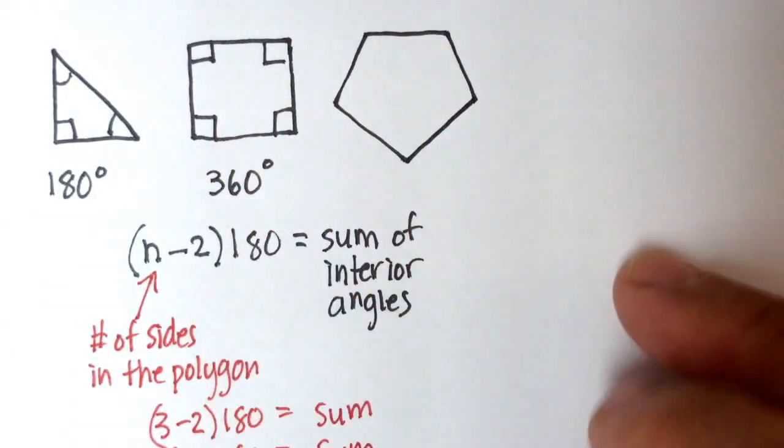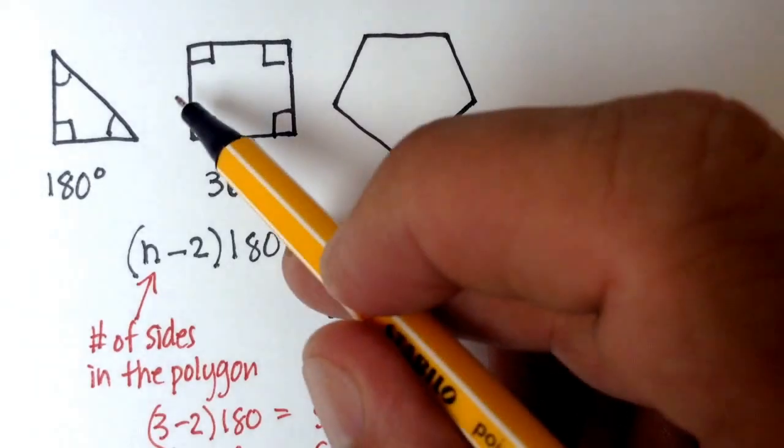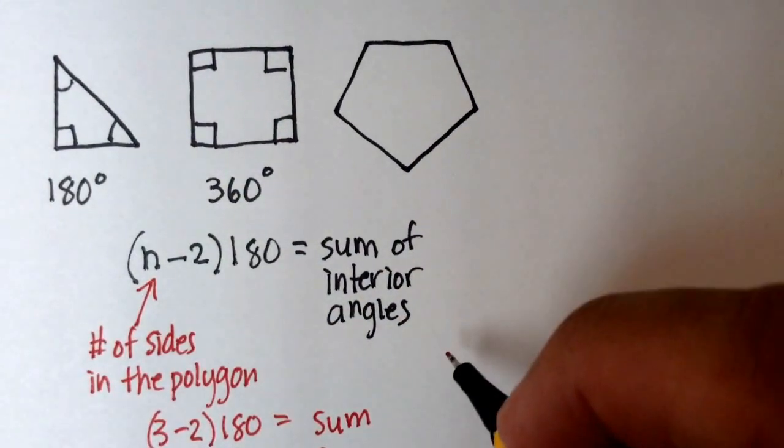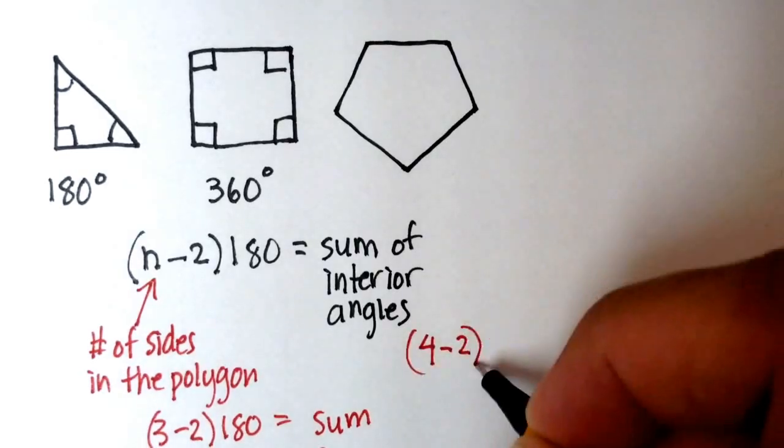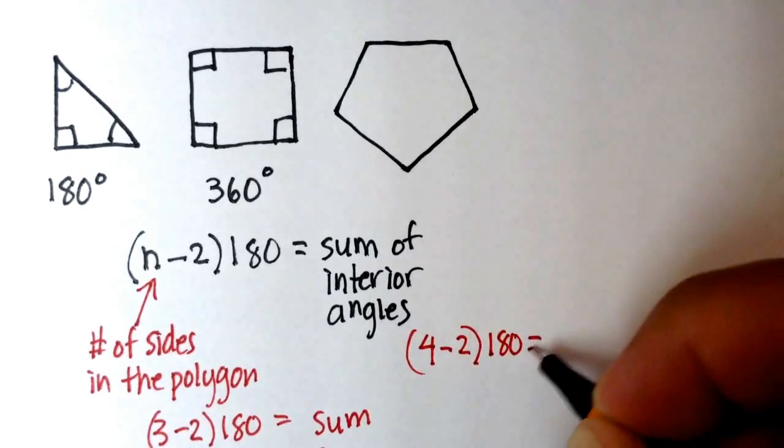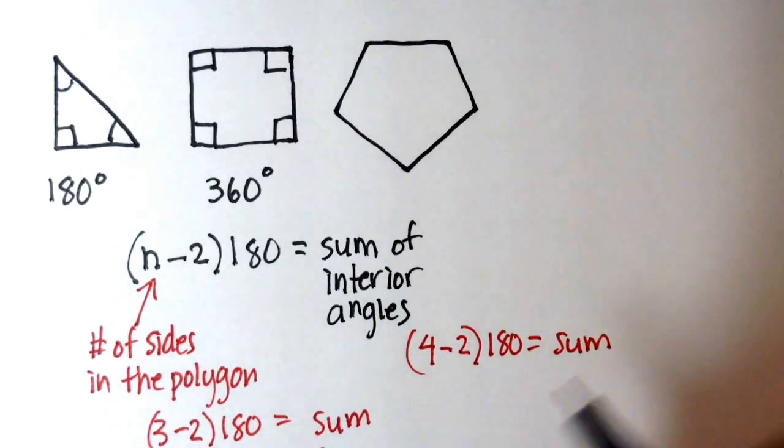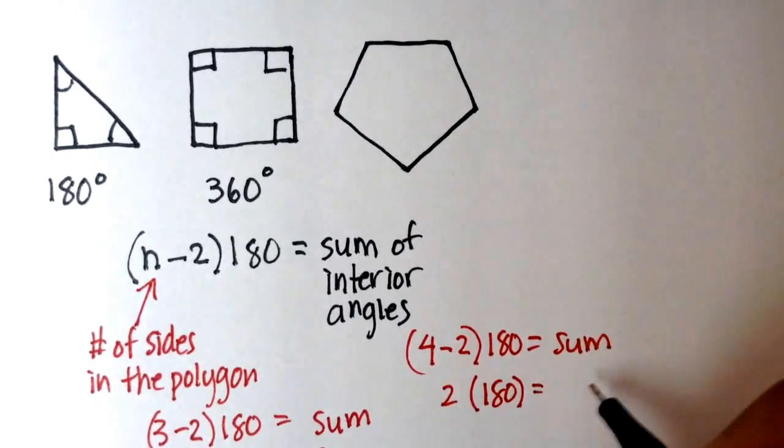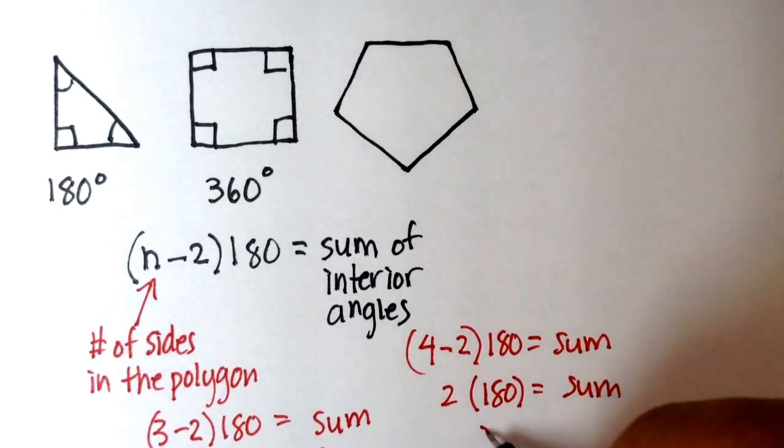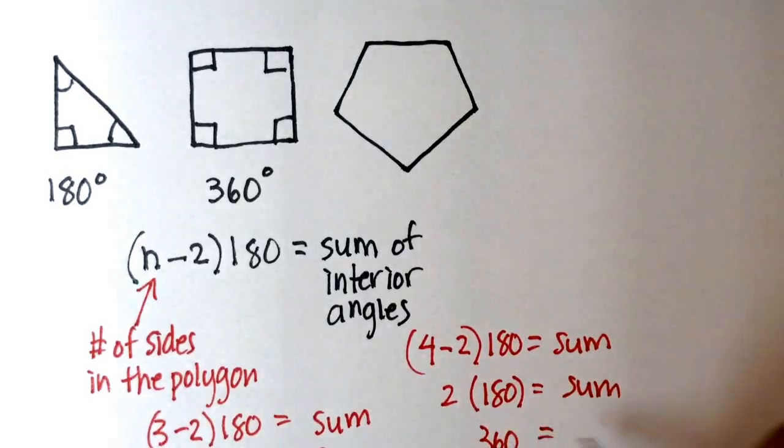Let's see if it works for a square. The square has four sides, so again, we're going to put 4 minus 2 times 180 is equal to the sum. That gives me 2 times 180, or sure enough, 360 degrees is equal to the sum.